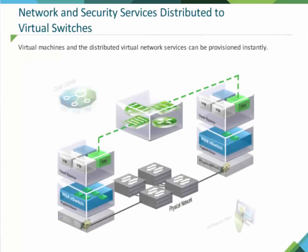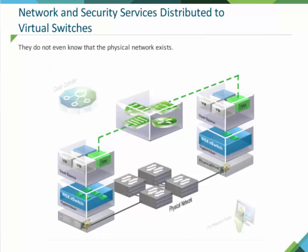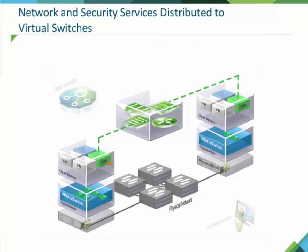Virtual machines and the distributed virtual network services can be provisioned instantly. It's worth noting that what the workload sees is the virtual network — they do not even know that the physical network exists. The virtual machines could be using IPv6 while the underlying physical network only supports IPv4. When the virtual machines communicate, packets move through the ingress network services, and rules are delivered and enforced on the first virtual switch. The packet is then encapsulated and sent through the underlying physical network to the destination hypervisor virtual switch.